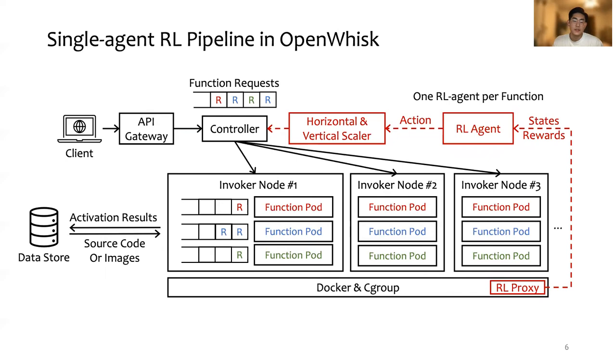An RL agent gets the state and rewards from the RL proxy module from the infrastructure, which is Docker and cgroup in our case, translated from the measurements and system telemetry. Based on its policy, it generates the actions to be sent to the horizontal and vertical scaler.